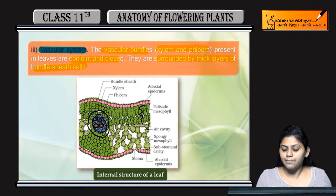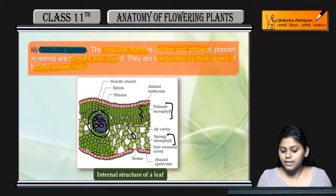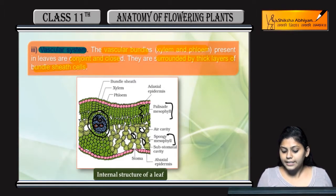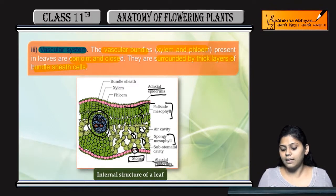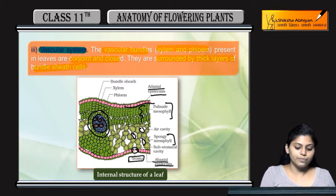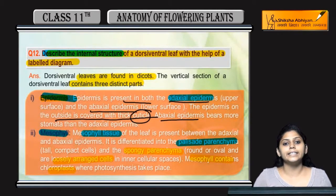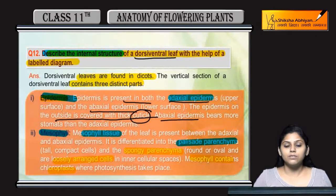This is the palisade mesophyll layer and these are the spongy mesophyll cells. As you can see, they are loosely packed and there are air spaces. This is the abaxial surface — the lower surface — where stomata are present. The adaxial epidermis is the upper layer and the abaxial epidermis is the lower layer. So these are the internal structures present in the dorsiventral leaf: epidermis, vascular bundles, and mesophyll cells.